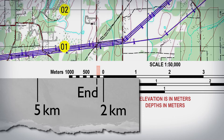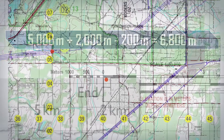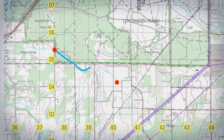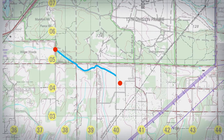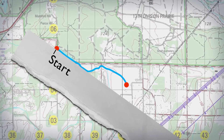The total distance is calculated like this: 5000 meters plus 2000 meters minus 200 meters equals 6800 meters. To determine the distance along a road, stream, or other curve, use a straight edge strip of paper similar to the previous examples.